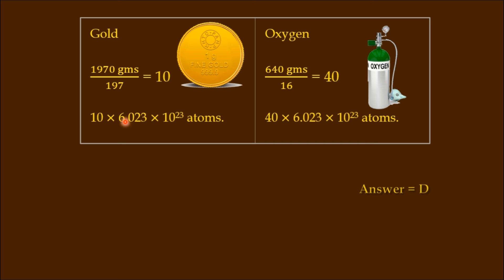6.023 × 10^23. Here, 10 gram atoms, so 10 into Avogadro's number. Here, 40 into Avogadro's number. So among the four, what is the answer? Correct answer D. Now, if you compare all four options, what do you observe? Greater the number of gram atoms, greater will be the number of atoms.